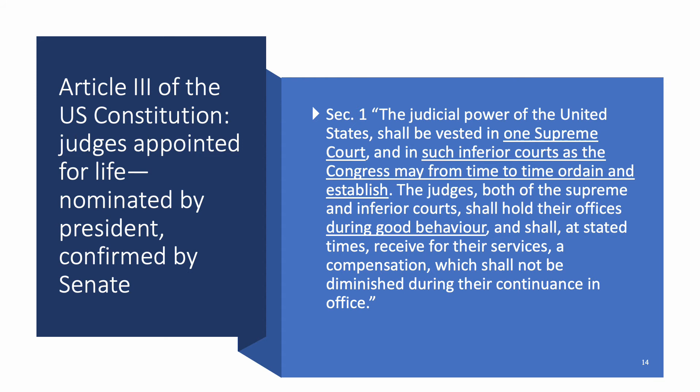Article 3 of the Constitution provides that the judicial power of the U.S. is vested in one Supreme Court and such inferior courts as Congress may establish. Note what it says about judges — they hold their offices during good behavior, meaning unless they're impeached, they stay for life. They have life terms, never run for re-election, never need to be reappointed. Once nominated by the President and confirmed by the Senate, they are there for life if that's what they want.